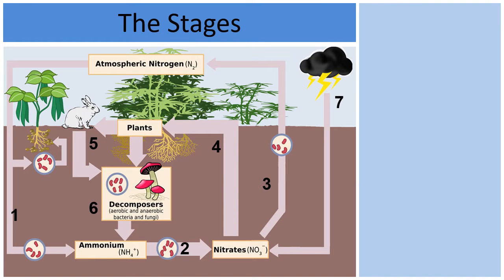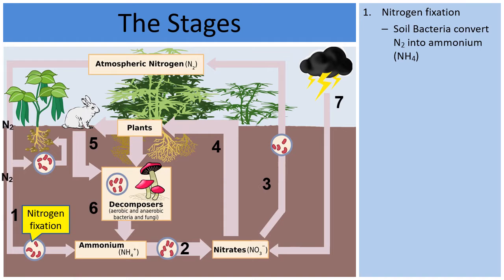Looking at this diagram, there are seven areas we're going to discuss. In area one, the conversion of nitrogen from the atmosphere begins — a process known as nitrogen fixation. In this process, bacteria in the soil take in atmospheric nitrogen (N₂) and through a chemical reaction produce what's called ammonium (NH₄). The nitrogen is changing forms, and following the arrows, the NH₄ begins to build up in the soil.